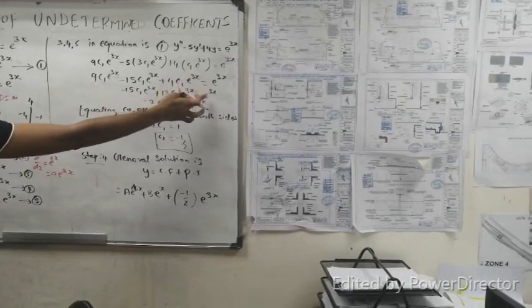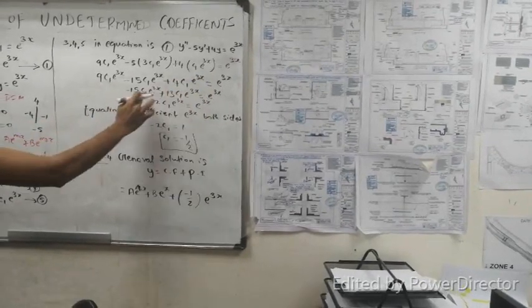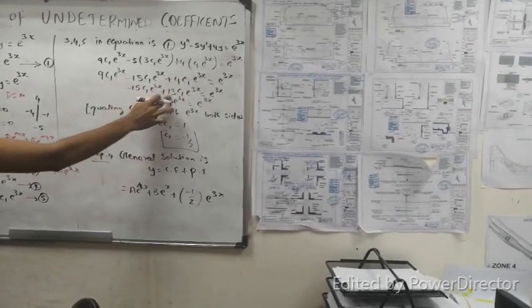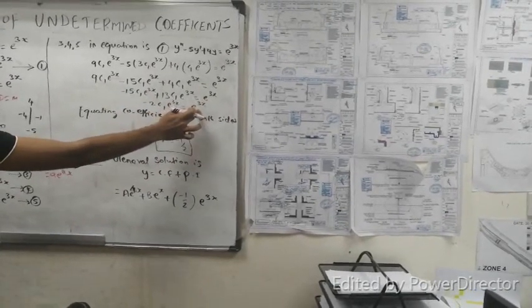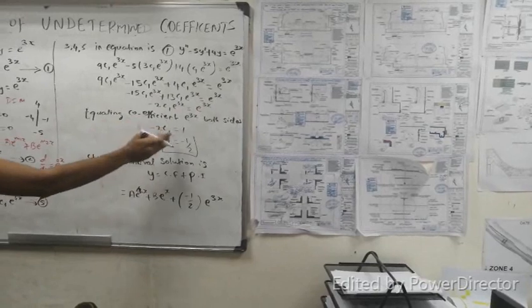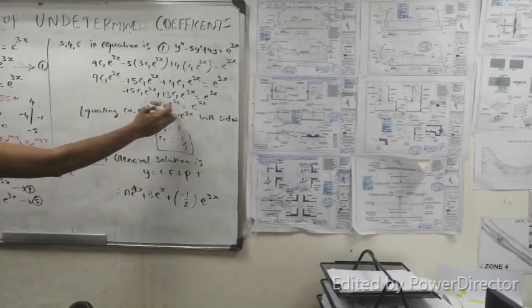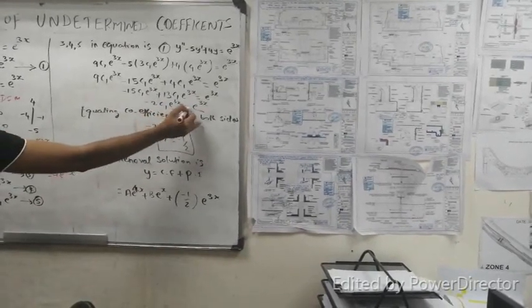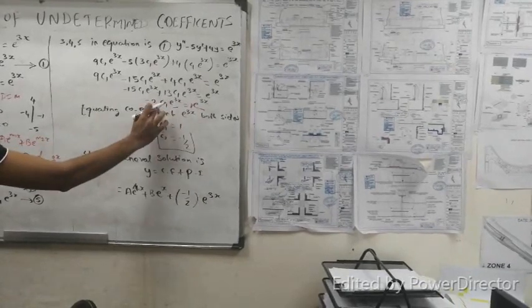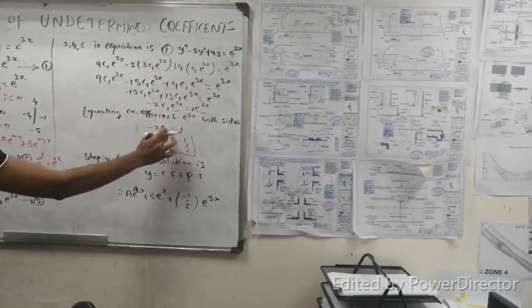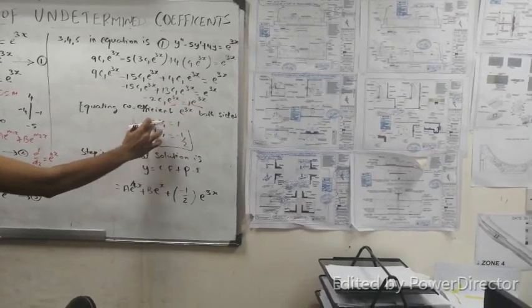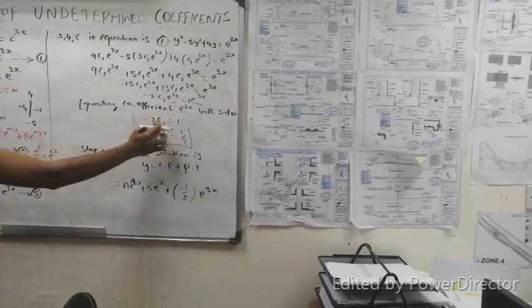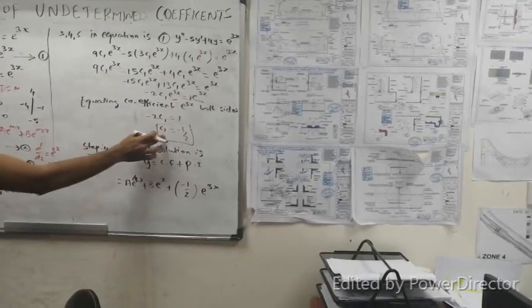We have -2C1 e^(3x) = e^(3x). Setting the coefficients equal: -2C1 = 1, so C1 = -1/2.